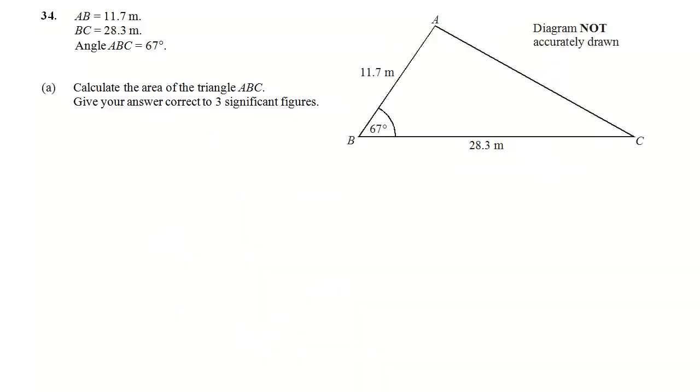OK, question 34. First thing to note is it isn't a right-angled triangle. So don't start with Sohcahtoa or anything like that. We are given two sides and the included angle that has to find the area.